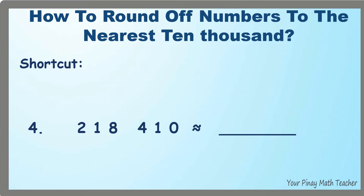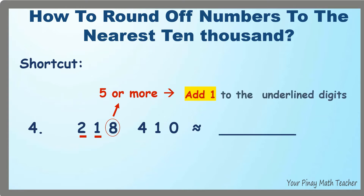Number 4: 218,410. Underline the 10,000's digit, which is 1, and also the 100,000's digit. Look at the digit to the right of 1. If it is 5 or more, add 1 to the underlined digits. So, 21 becomes 22, and 8, 4, 1, and 0 become zeros. The answer is 220,000.